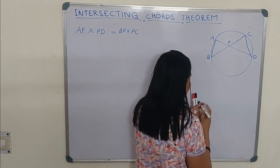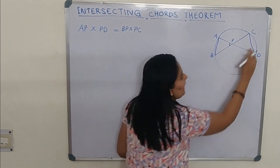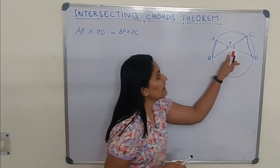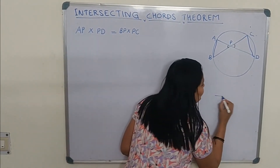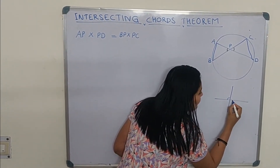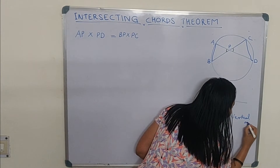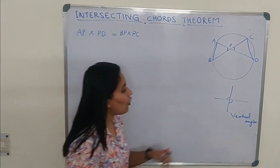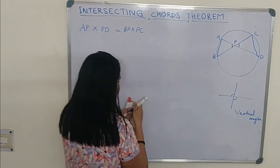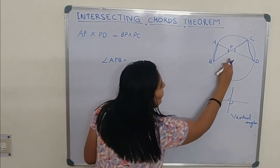First of all, consider angle APB and angle CPD. These angles are called vertical angles. When two straight lines intersect at a point, the opposite angles formed are called vertical angles. Vertical angles are always equal, so we can say that angle APB is equal to angle CPD.